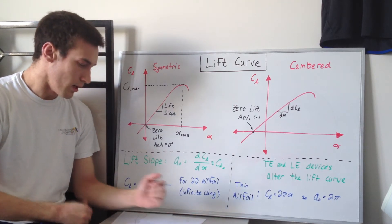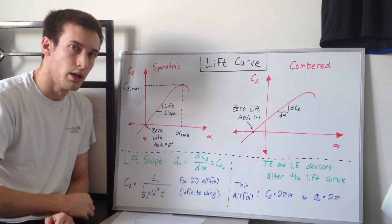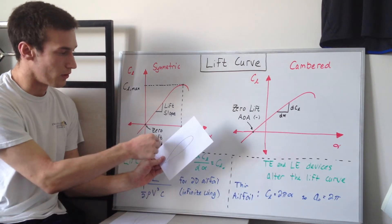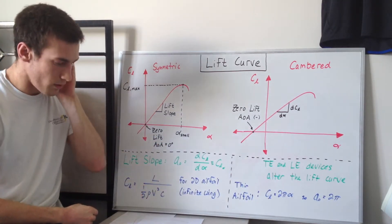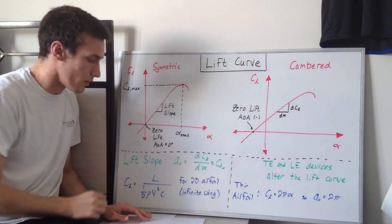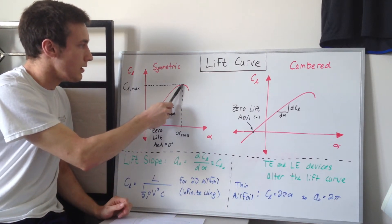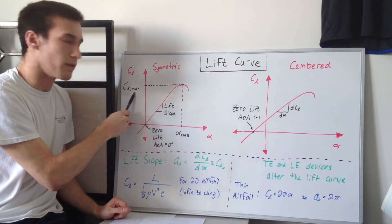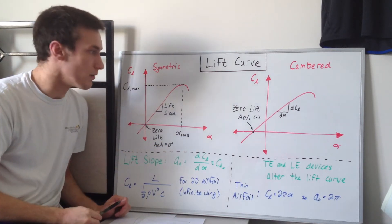As we increase the angle of attack more, we get to a point where flow separates off of the airfoil. If the angle is too high, the flow separates off the airfoil at the back and you get a stalled condition. At this point, you can take the lift coefficient at this angle — that's the maximum lift coefficient for this airfoil. This angle is the angle of attack at stall, or alpha stall.